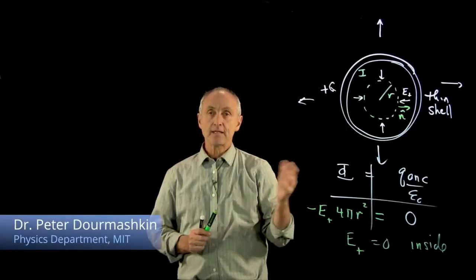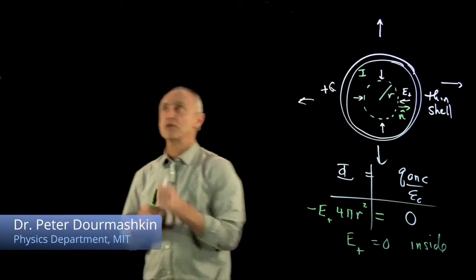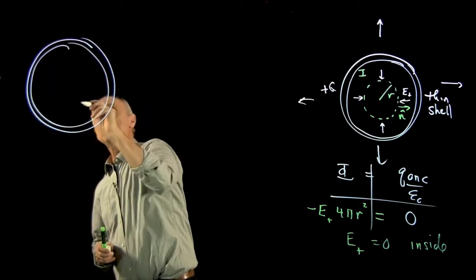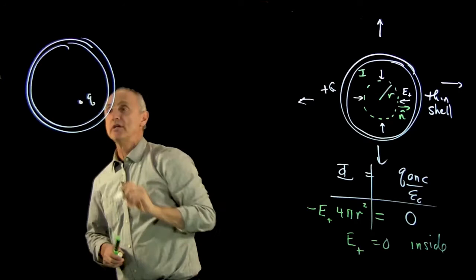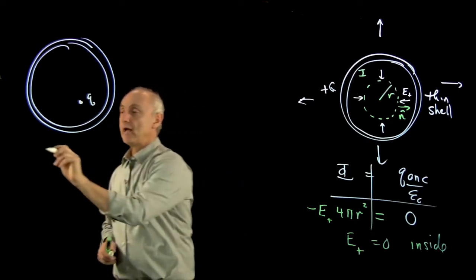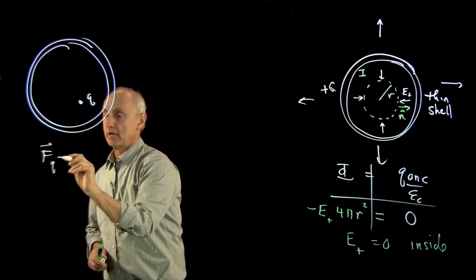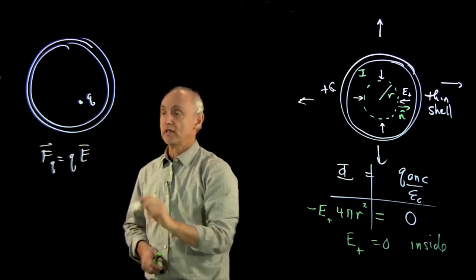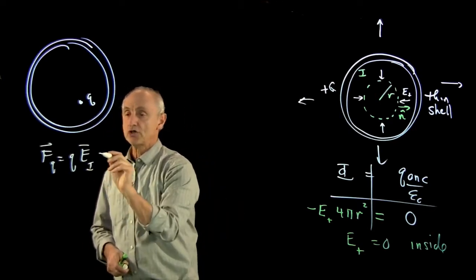Now, in this example, a typical question might be, let's look at our shell and let's put a charge q somewhere inside that shell. Now, we've claimed, which is true, that the force on this charge is equal to the electric field times the charge, and that's zero.